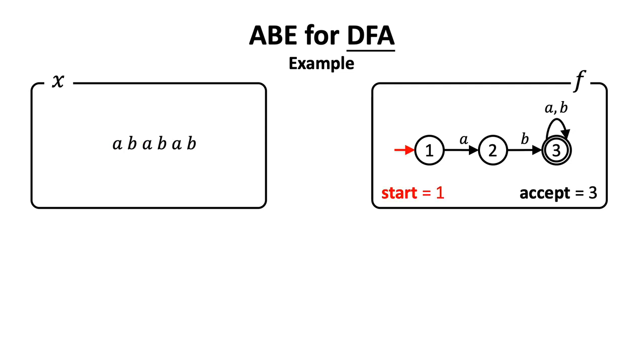The machine always starts from state 1 and have one accept state, state 3. In general, there can be more.